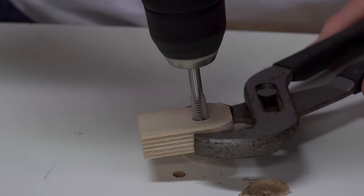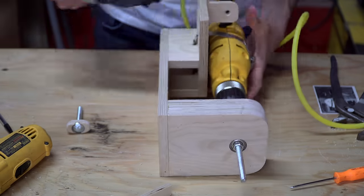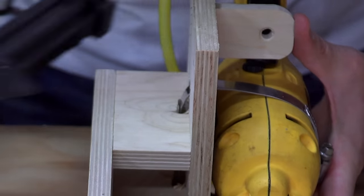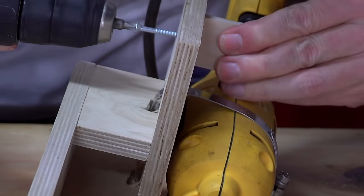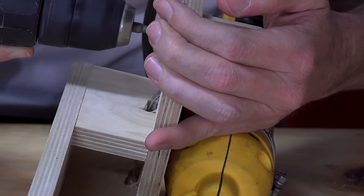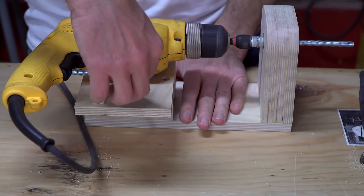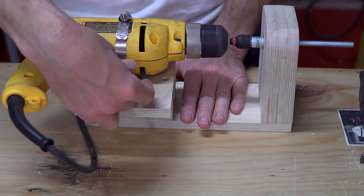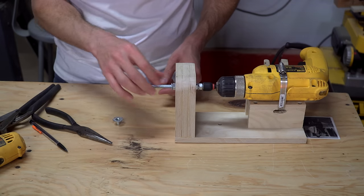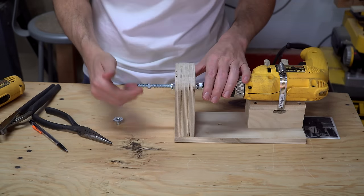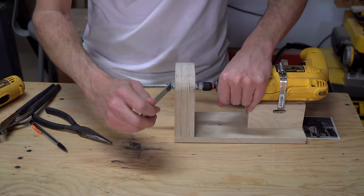I threaded a hole in this small block, and then mounted the block directly in front of the drill's trigger, and this is going to allow me to control the speed of the drill. It looked like the speed control mechanism was going to work out, so I moved on to assembling the rest of the headstock.